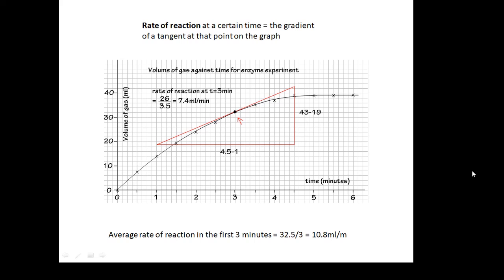What I've actually done here is I've worked out the rate of reaction at a point in time. At that point in time, at three minutes, that is the rate of reaction. What I could have done was work out the average rate of reaction in the first three minutes. And that would be the volume of gas, 32.5 divided by three. That would tell me the average rate of reaction in the first three minutes. If you get the gradient, you're actually getting the rate of reaction at an instant, at a point in time.